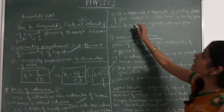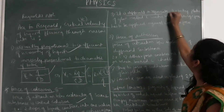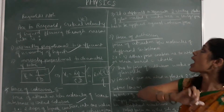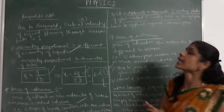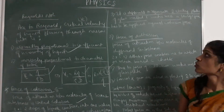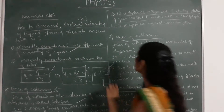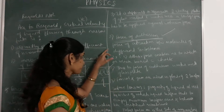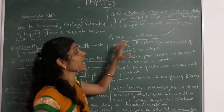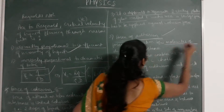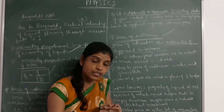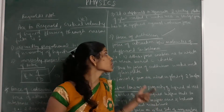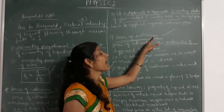It is difficult to separate two sticky glass plates wetted with water, because a large force has to be applied against the cohesive force. Those are examples of cohesive force. Next, force of adhesion or adhesive force: this is the force of attraction between the molecules of different kinds or different substances. If a force exists between two different kinds of substance, it is called force of adhesion.